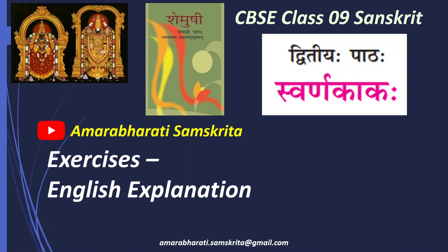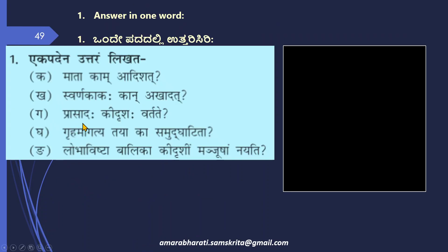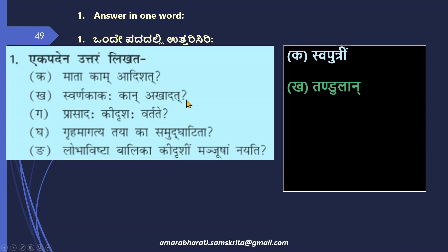The first question: Ekapadena Uttaram Likhata — answer in one word. Mata kaam adishat — whom did the mother order? She gave orders to her daughter, Swaputreeyam. Second: Swarna Kakah kaan akhadat — what did the golden crow eat? Tandulaan — that is rice grains.